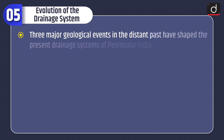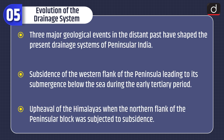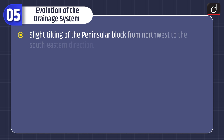Three major geological events in the distant past have shaped the present drainage systems of peninsular India: subsidence of the western flank of the peninsula leading to its submergence below the sea during the early Tertiary period; upheaval of the Himalayas when the northern flank of the peninsular block was subjected to subsidence; and a slight tilting of the peninsular block from northwest to the southeastern direction.